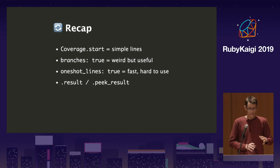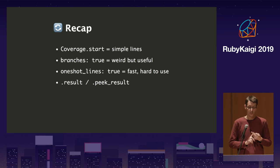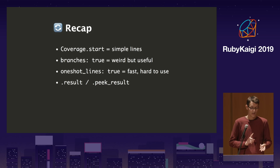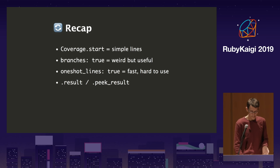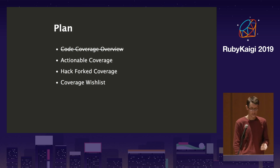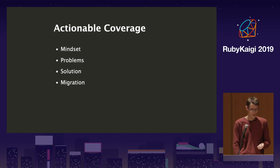Quick recap: we have line coverage, branch coverage which is much better but looks kind of weird in the format, one-shot lines which are fast but hard to automate, and we always call result or peek_result. Next is actionable code coverage itself — we'll go with the mindset, the problems, the solutions, and the migration.